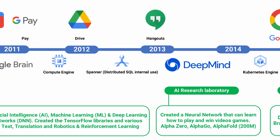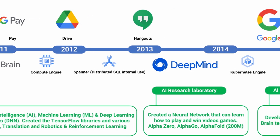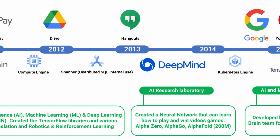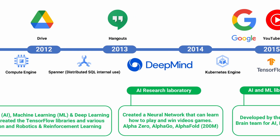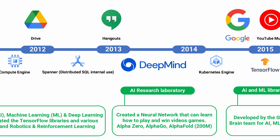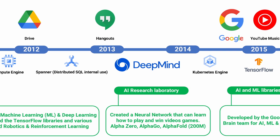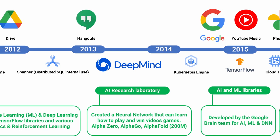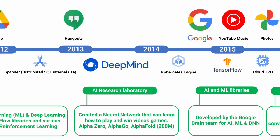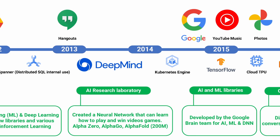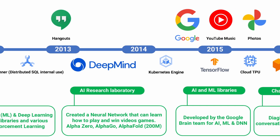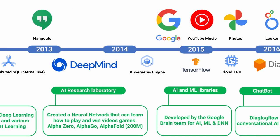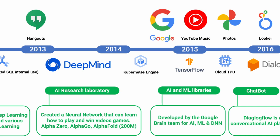DeepMind is an AI research laboratory acquired by Google. They created a neural network that can learn how to play and win video games. You may have heard of them through AlphaZero, AlphaGo and AlphaFold. AlphaFold has discovered over 200 million different protein types for medical research.